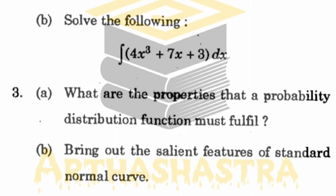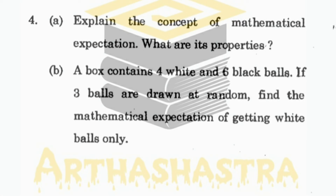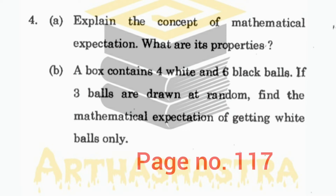For Part B of question 3, refer section 16.7.3. Moving to question number 4, it is from Block 5, Unit 17. For Parts A and B refer section 17.8. Part B is a book question given in Check Your Progress 5; its solution is on page number 117 in Book 5.